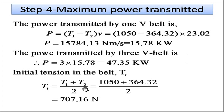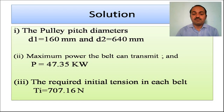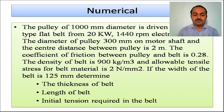The initial tension in each belt is T0 = (T1 + T2) / 2 = (1050 + 364.32) / 2 = 707.16 N. Summary for numerical 2: pulley diameters are 160 mm and 640 mm, maximum power is 47.35 kilowatt, and initial tension in each belt is 707.16 N.